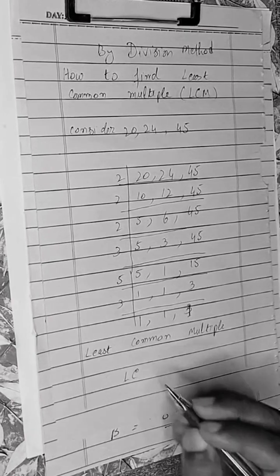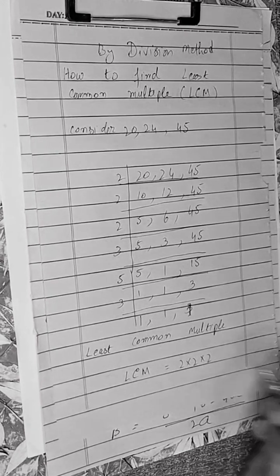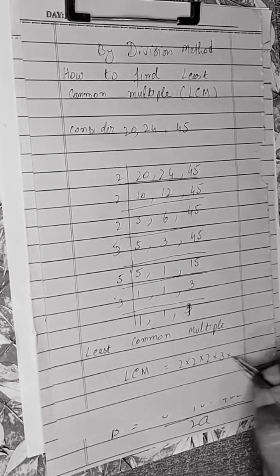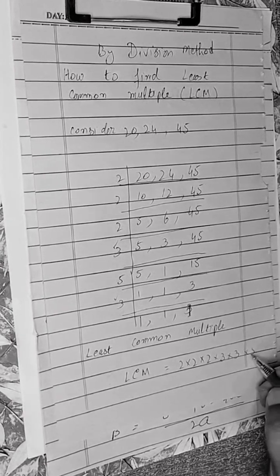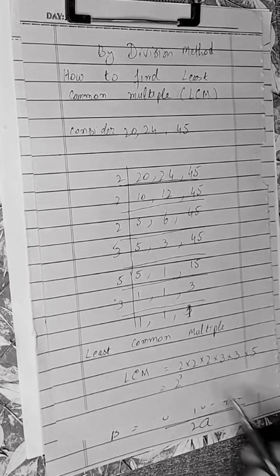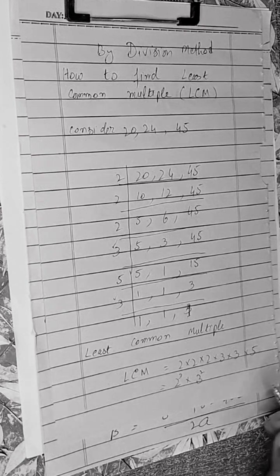LCM is equal to 2 multiply by 2 multiply by 2, then 3 multiply by 3 multiply by 5. It is 2 to the power 3 multiply by 3 to the power 2, 3 is multiplying 2 times, and 5.